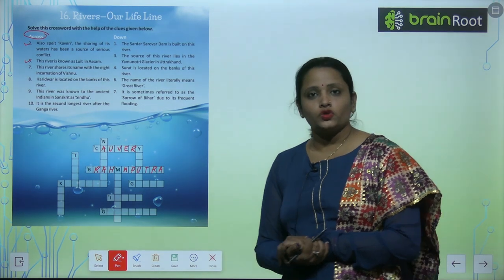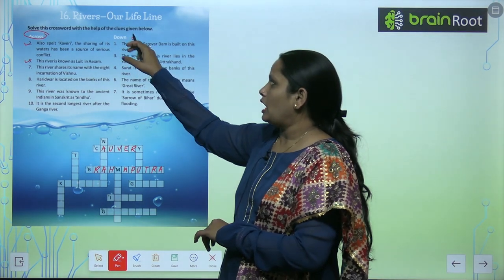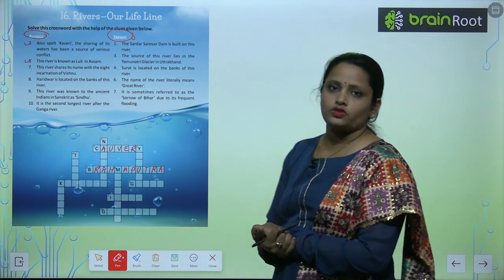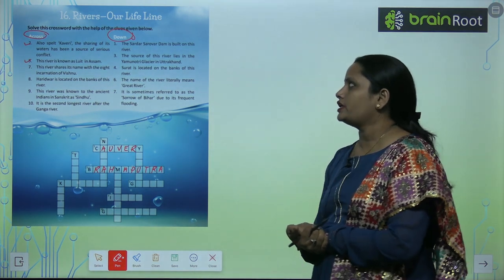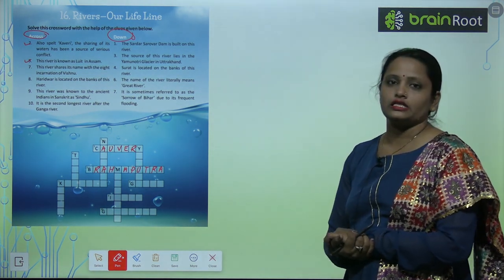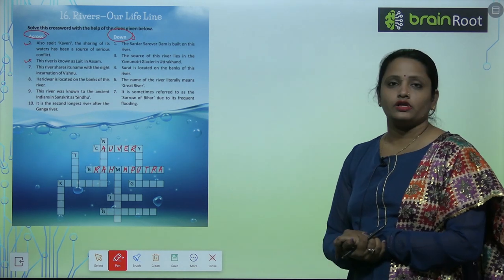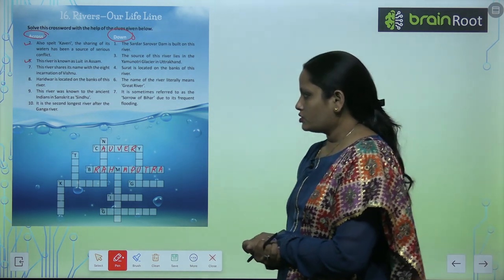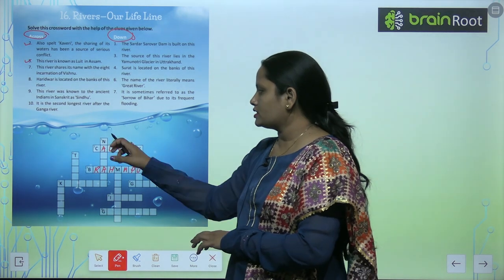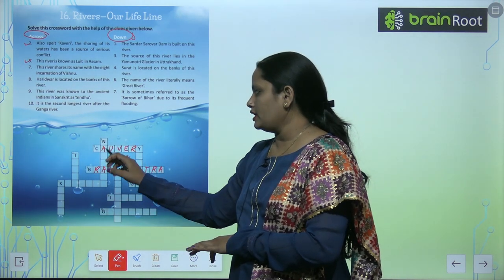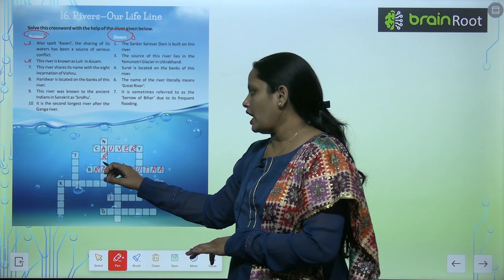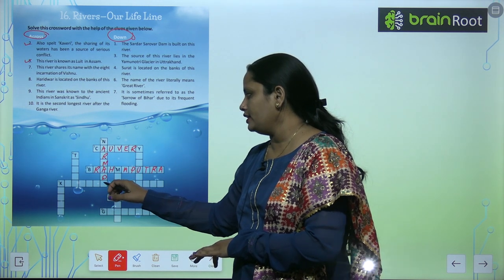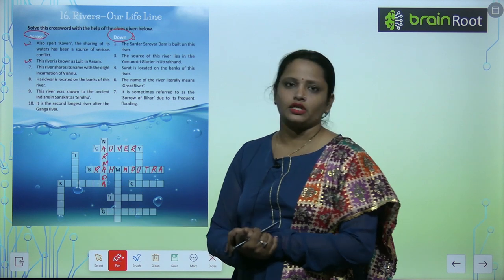Now let's move on to the down column. The first one: the Sardar Sarovar Dam is built on this river — jo Sardar Sarovar Dam hai wo is river pe hi bana hai. The name of this river is Narmada — N-A-R-M-A-D-A. Narmada.